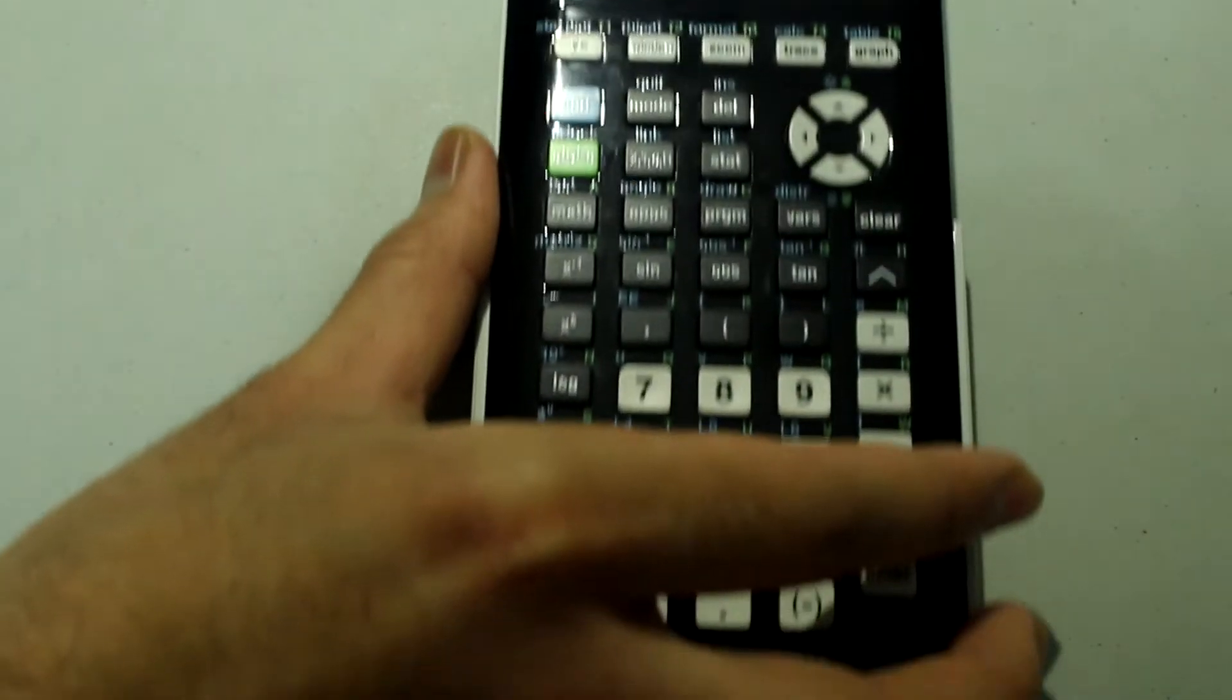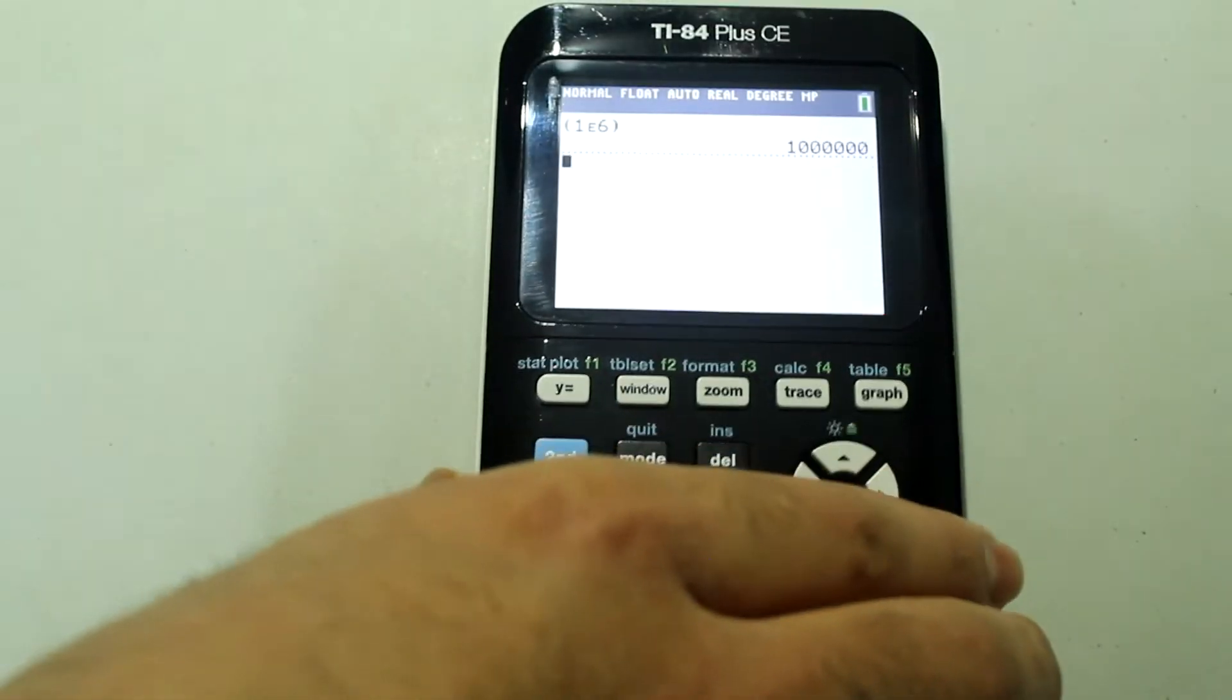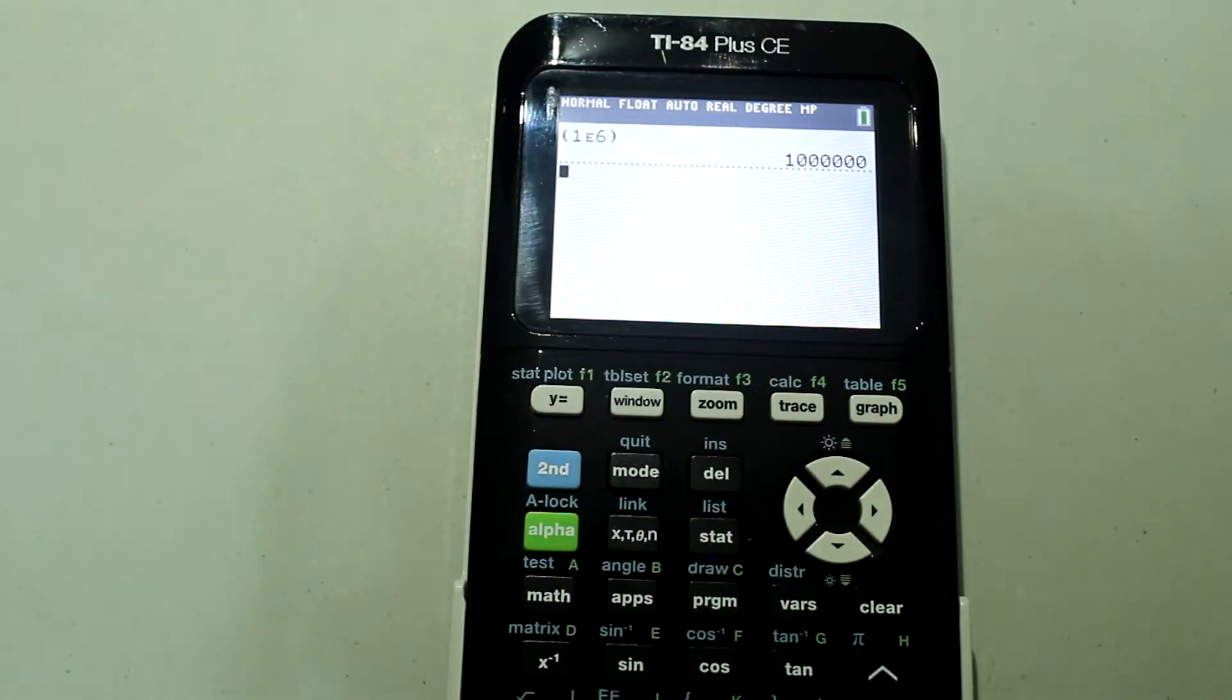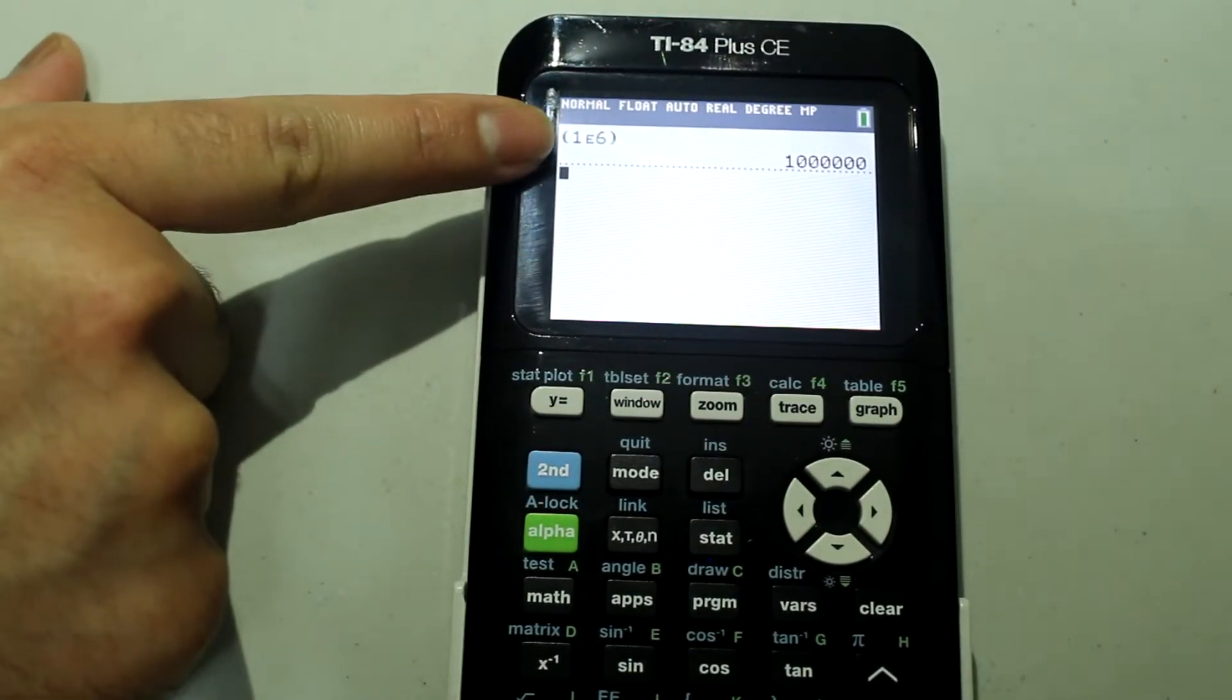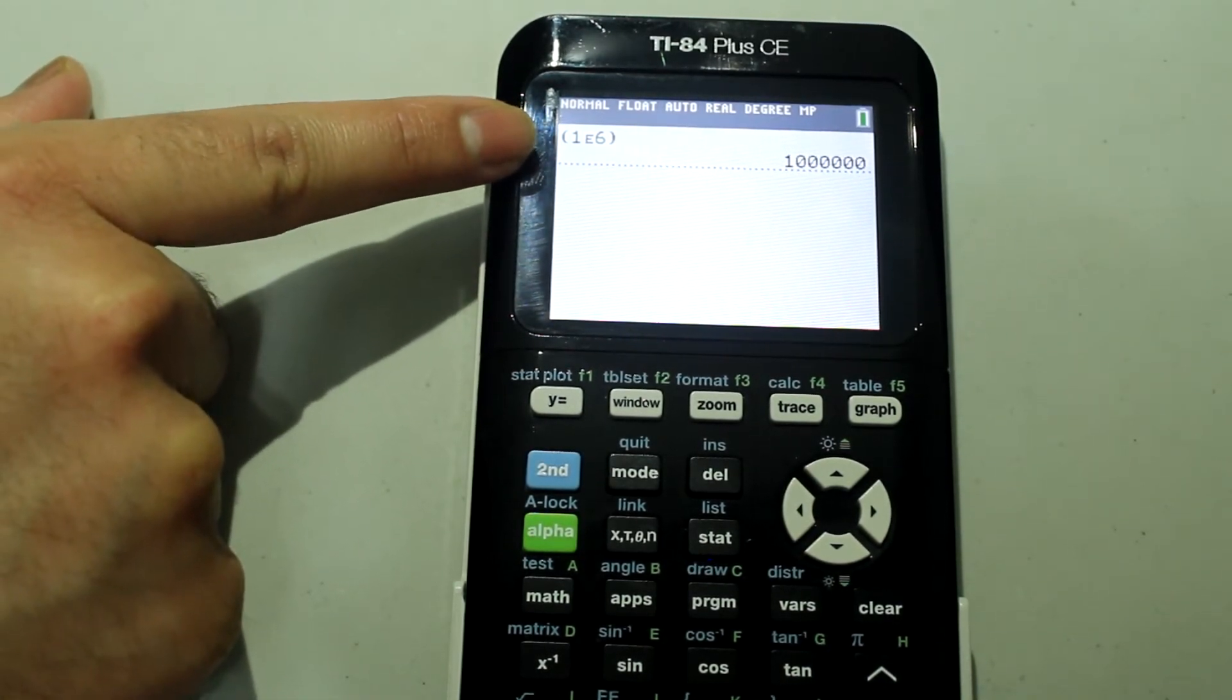And if I press enter, you can see that the calculator has interpreted this as one million. One E6 is the same as saying one times ten to the sixth.